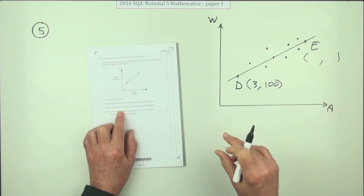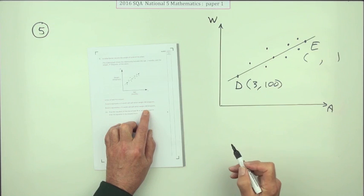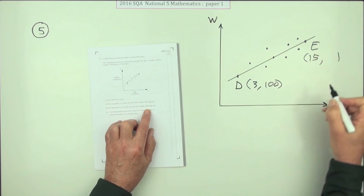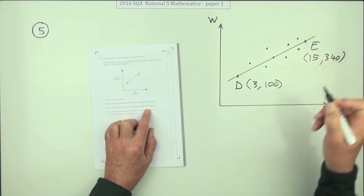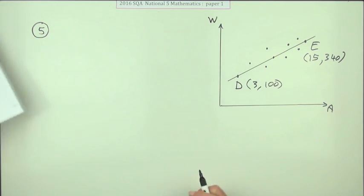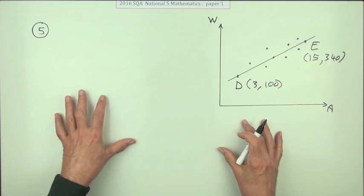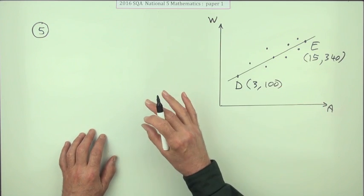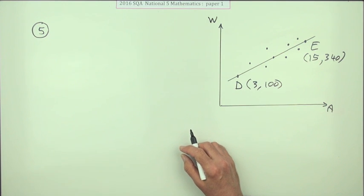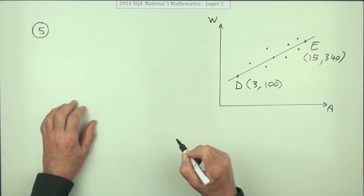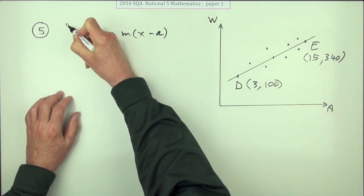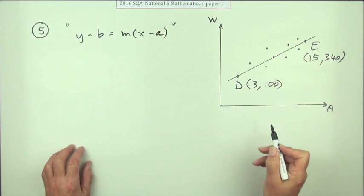Point E represents a 15-month-old calf which weighs 340 kilograms. The question asks: find the equation of the line of best fit in terms of a and w. Depending on your preference, you can start from y = mx + c, or use y - b = m(x - a). Since you know about y - b = m(x - a), that's the form you should take — in inverted commas, since there are no y's and x's here, it's w's and a's.